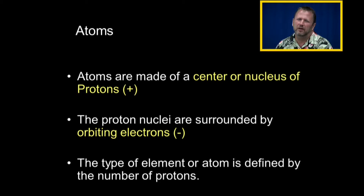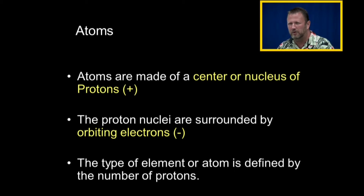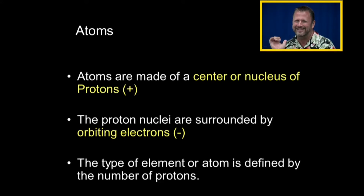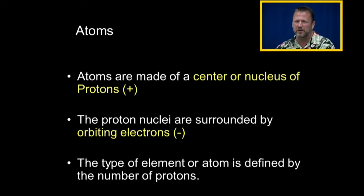Atoms have something in the center called a nucleus — different from the nucleus of a cell. If it's positively charged, it's a proton; if it's negatively charged, it's an electron. The electron orbits the nucleus and is negatively charged; the proton is in the nucleus and is positively charged. Every type of element or atom is defined by the number of protons — one proton means it's hydrogen, two protons means it's helium.